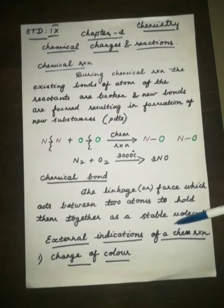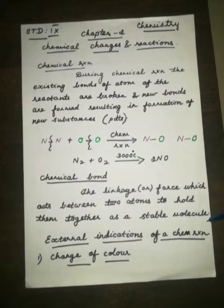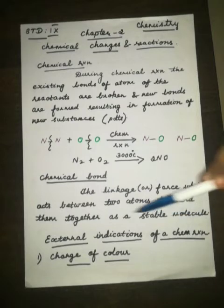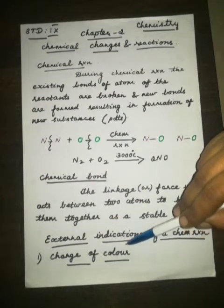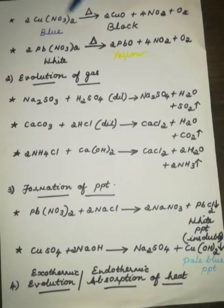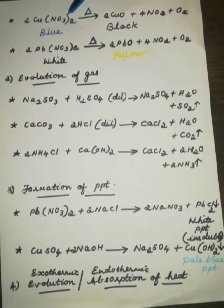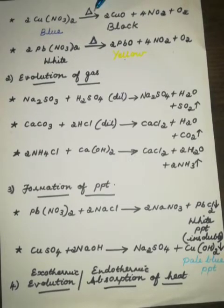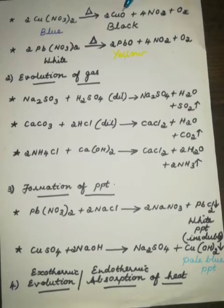We have seen so many external indications of chemical reaction. One is change of color. We will see the change of color reaction now. In this copper nitrate salt, it is ink blue color. You take it in a dry test tube and do the heating. The color in the bottom of the test tube changes to black color.